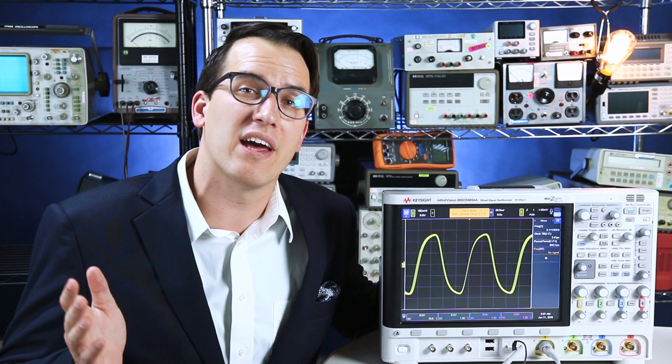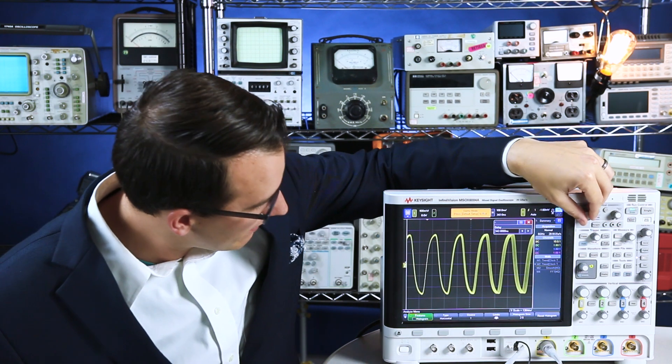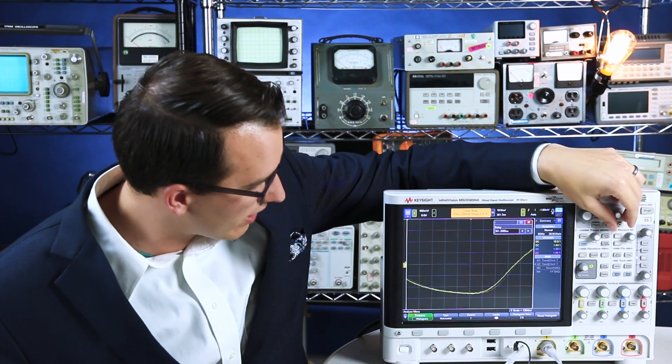The other tool we like to use when looking at jitter on oscilloscopes is a histogram. Let's look at a histogram on this noisy clock signal. To do that, I'm going to first scroll over a couple edges so I'm not looking at my trigger point and then I'm going to zoom way in on one of these edges.